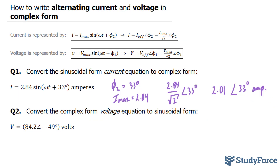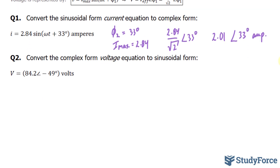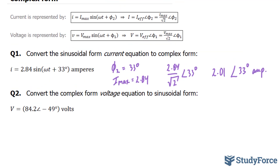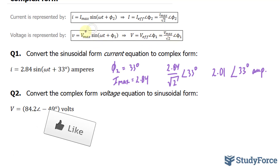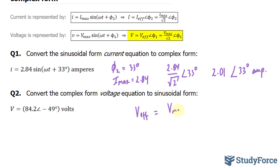In question 2, we're asked to convert the complex form voltage equation to sinusoidal form. If you take a look at this equation here, we need to convert this format so that it looks like this. This is our effective voltage, represented as V subscript EFF. The effective voltage is equal to V max over the square root of 2.